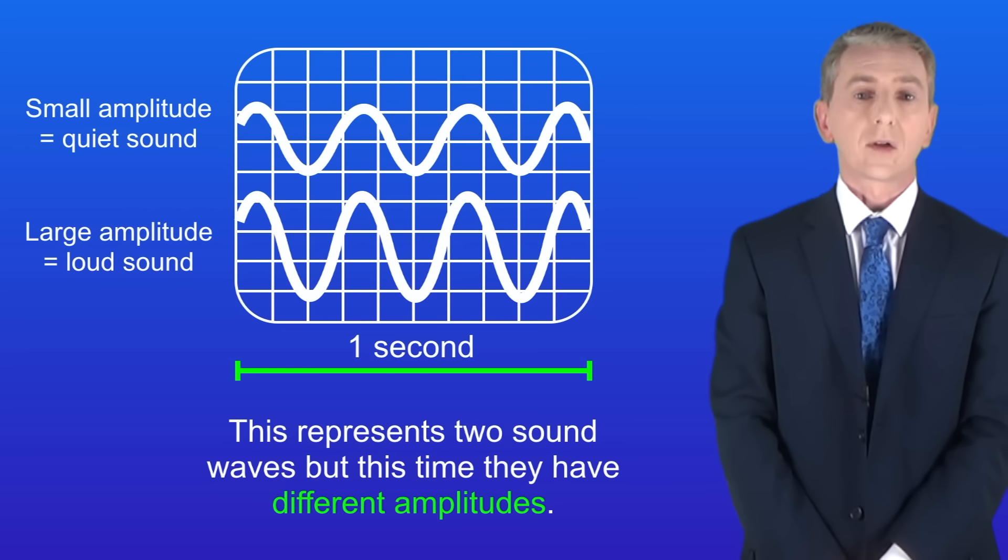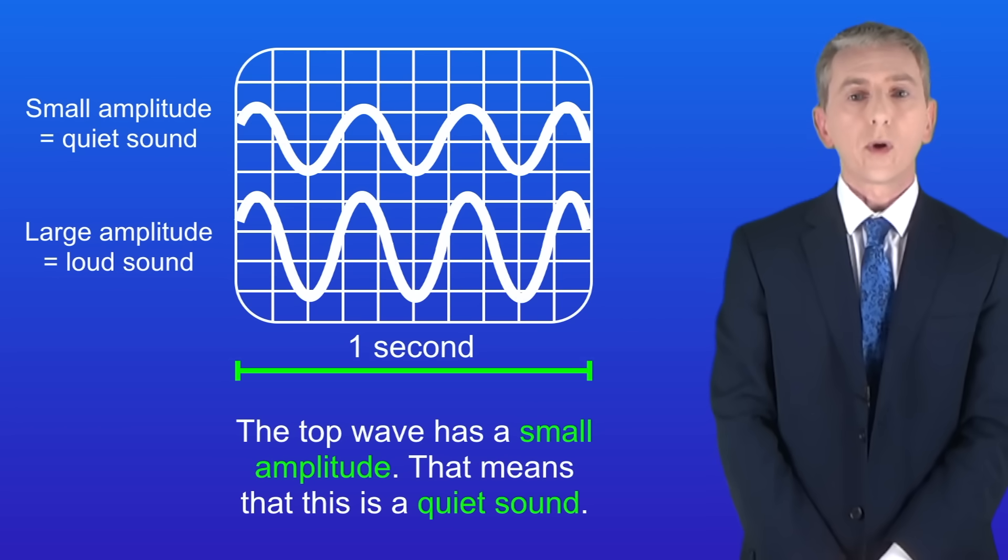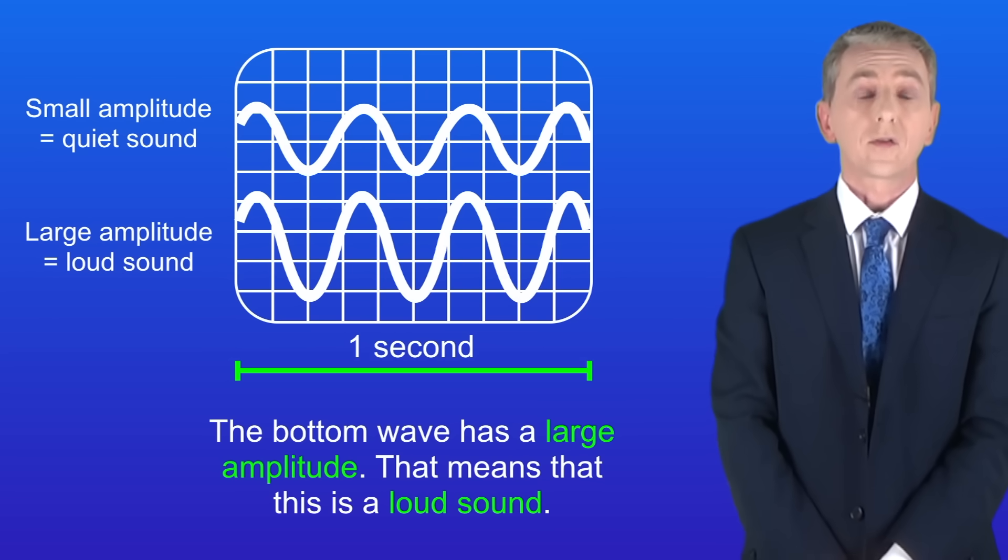Okay again this represents two sound waves but this time they've got different amplitudes. The top wave has a small amplitude so that means that this is a quiet sound, whereas the bottom wave has a large amplitude and that means that this is a loud sound.